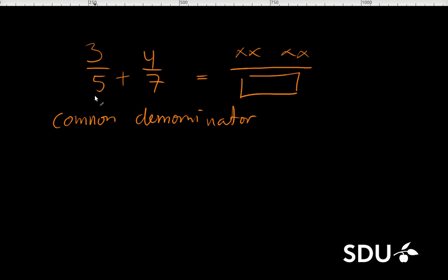Okay, to figure out the common denominator we can take the product of the two denominators. So we have 5 times 7, which is 35, and that will be the common denominator.